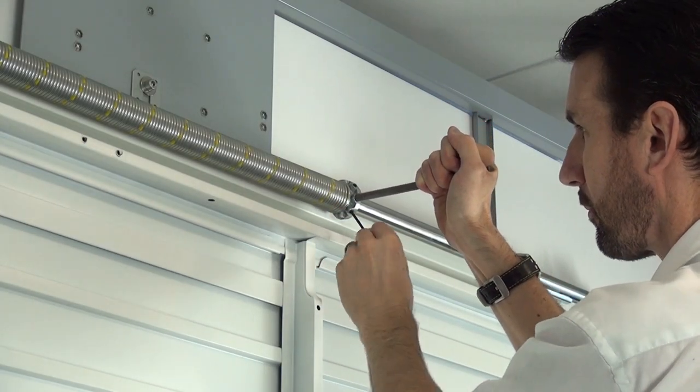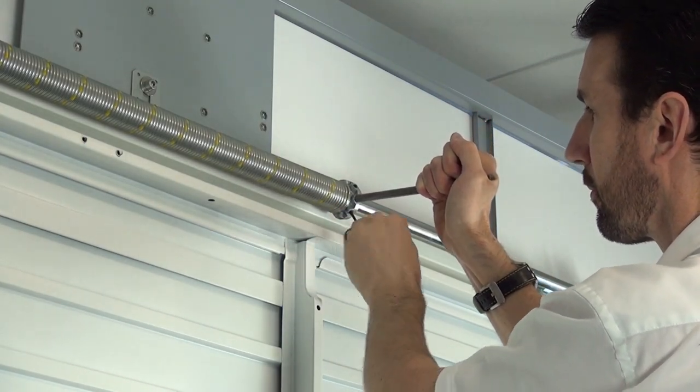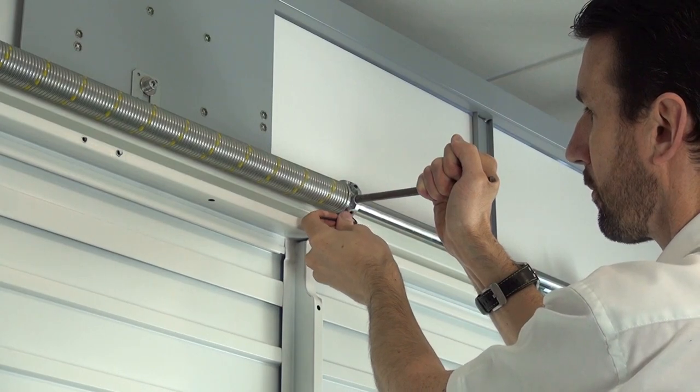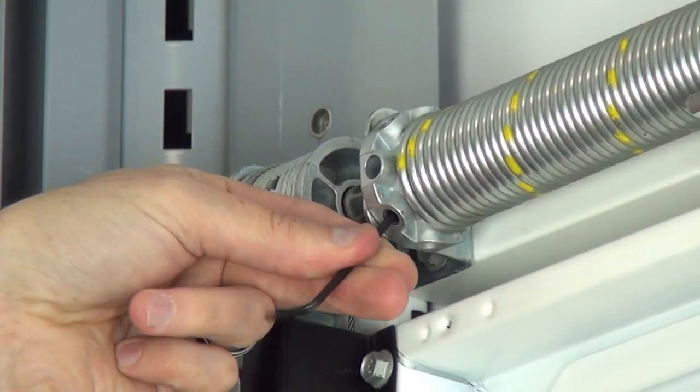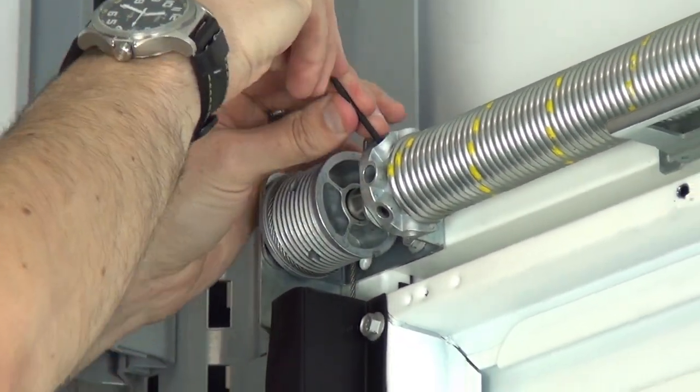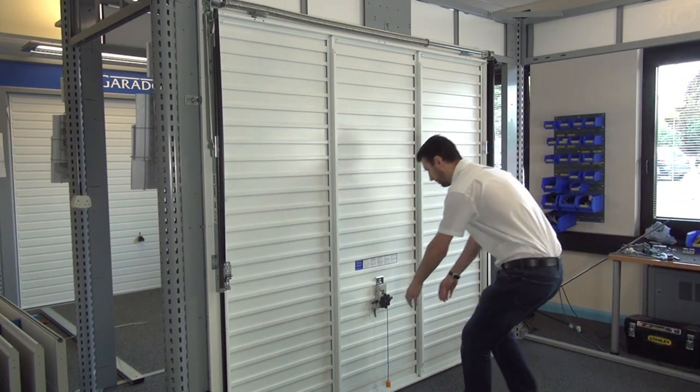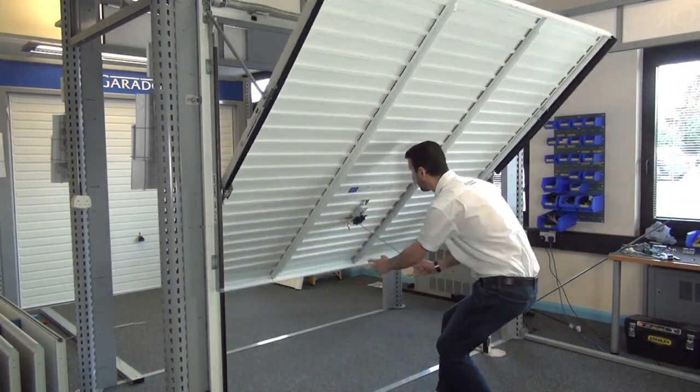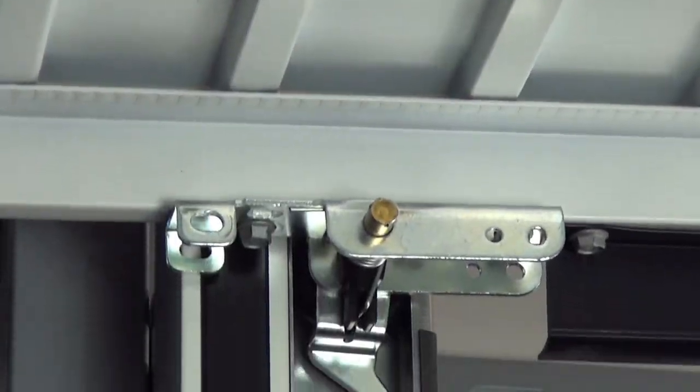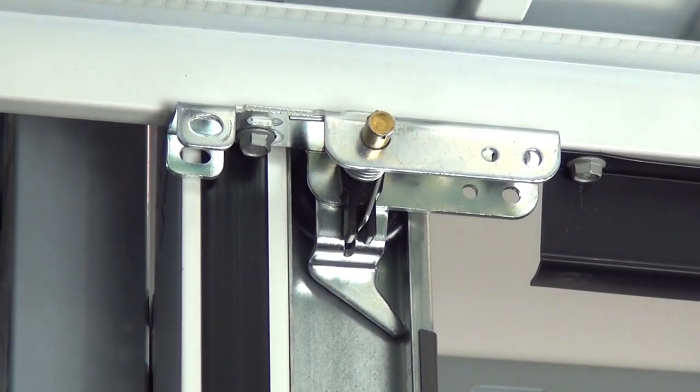After tension is applied, re-tighten the grub screws on the right hand side of the spring. Undo the grub screws on the left hand side of the spring, enabling the spring force to open the door. The next step is to make sure that the door opens fully to the stop position under spring tension alone.